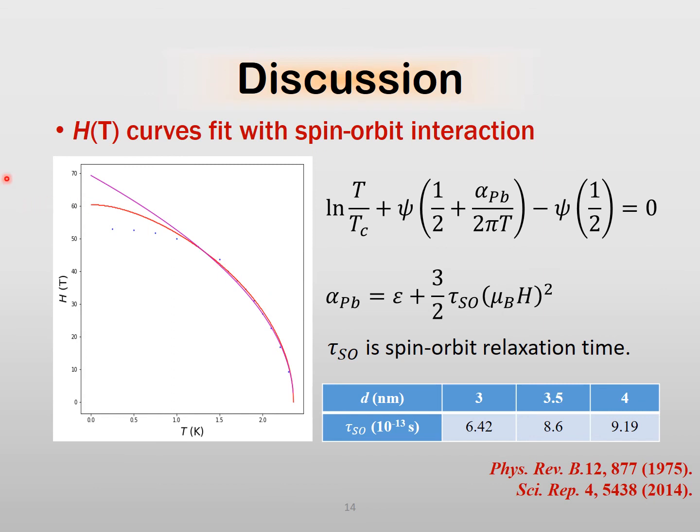When the WHH model is taken into account at low temperature, the fit gets better, and we are able to estimate the spin-orbit coupling strength, which increases with increasing film thickness.